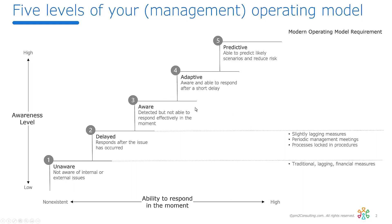Organizations in the aware category have a better mix of leading measures, but they're still encumbered by hierarchical decision-making — information has to flow up to senior leadership who makes decisions on behalf of the organization. Management meetings here still don't match the cadence of the business environment they're in.